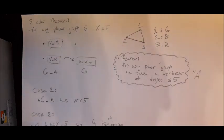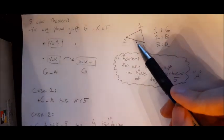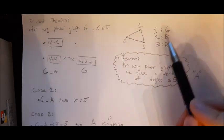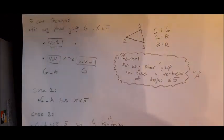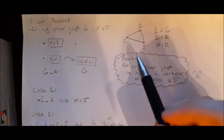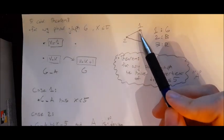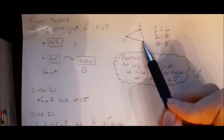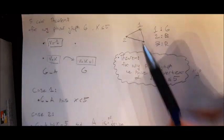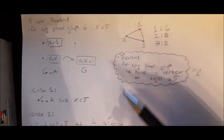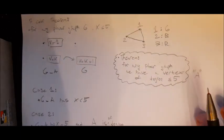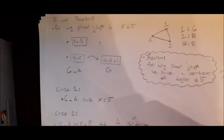Coloring is basically taking the vertices of a graph and giving them a color. Here we indicate each color using a number: one for green, two for blue, and three for red. With coloring, you have to color each adjacent vertex with a different color. This graph has a chromatic number of three because you can't use less than three colors to color it.